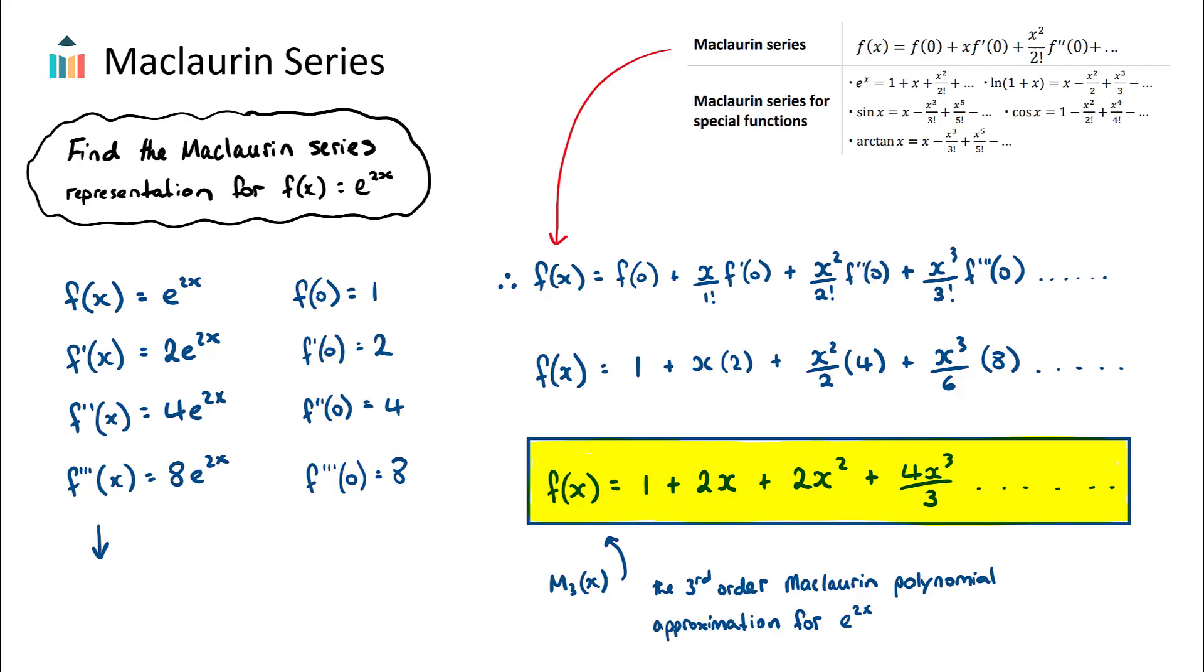The basic idea of a Maclaurin series, which is actually a type of Taylor series, is to take any function that we might be given, for this example here it's e to the power of 2x. What the Maclaurin series representation or expansion of this is, is we want to find some polynomial function that is an approximation for this function, which wasn't a polynomial.